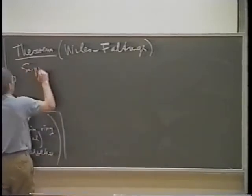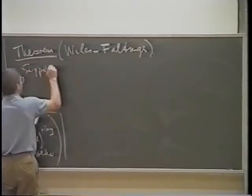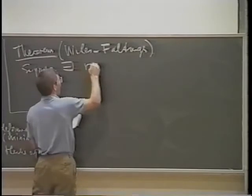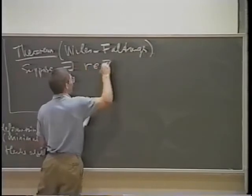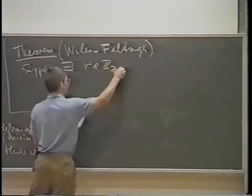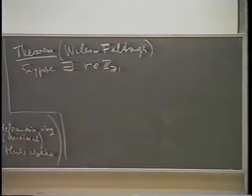Suppose there exists an integer N which is at least one, a universal integer R.